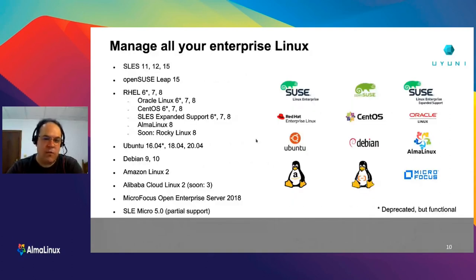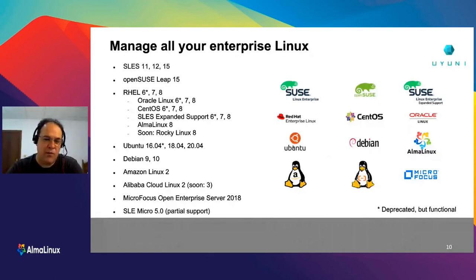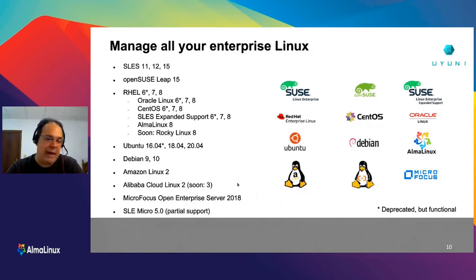Uyuni supports most enterprise Linux operating systems — of course all the SUSE operating systems, all the RHEL clones: RHEL, CentOS, Oracle Linux, AlmaLinux. And then more exotic operating systems: Ubuntu, which is getting very popular, Debian, Amazon Linux, Alibaba Cloud Linux, and LiMicro — a new minimal OS introduced by SUSE recently. We will keep adding new operating systems in Uyuni. This talk is exactly about how we added support for AlmaLinux.